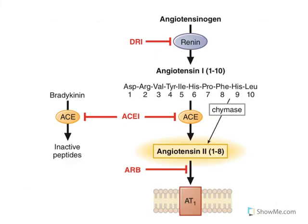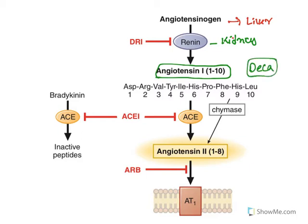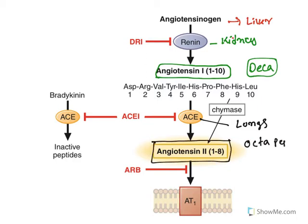In more detail: angiotensinogen is released from the liver. Whenever blood pressure is low, renin is released from the kidney. Renin acts on angiotensinogen and converts it into angiotensin I, which is a decapeptide — deca means 10 amino acids. This decapeptide is affected by ACE, angiotensin converting enzyme, released from the lungs, and angiotensin I is converted to angiotensin II, which is an octapeptide. This octapeptide acts on AT1 receptors. Importantly, the same ACE enzyme also acts on bradykinin and converts it into an inactive peptide.